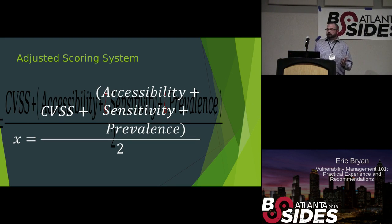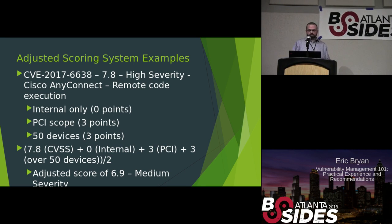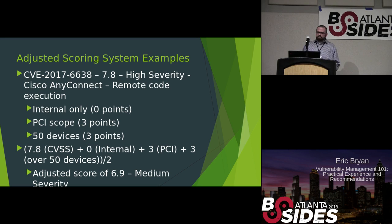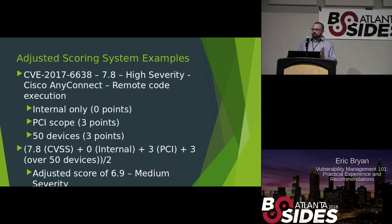Let's take a practical example of our Adjusted Scoring System — this is one that actually happened. This client uses ISE and AnyConnect as the supplicant, so tons and tons of devices with this. It's CVE-2017-6638, an AnyConnect RCE. We had all these devices; they were internal only, but one could be accessed from outside the organization directly. They were within PCI scope, and way more than 50 devices. We did our math and came away with an adjusted score of 6.9, knocking it down from a high to a medium, which helped us prioritize it over everything else coming in.